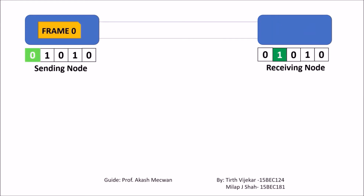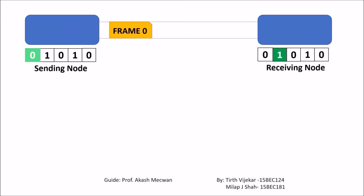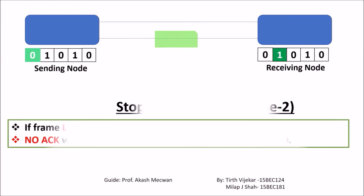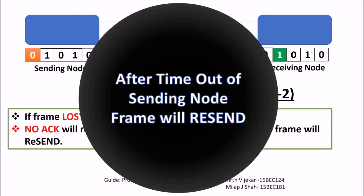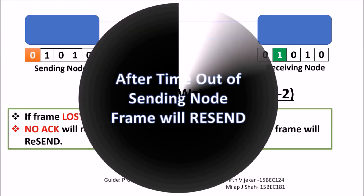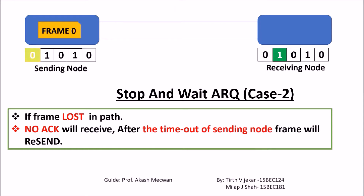As we have seen in case one, there is no loss. Now let's see what will happen if a frame is lost in the transmission path. The transmitter will timeout and it will resend the frame.